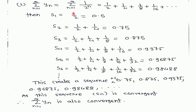For another example, if we have the series of 1/(2^n), we can generate the sequence of partial sums: s1 = 0.5, s2 = 0.75, s3 = 0.875, and so on, creating the sequence 0.5, 0.75, 0.875, 0.9375, 0.96875, 0.984375, ... As this sequence approaches 1, the limit equals 1, which implies the sequence sn is convergent, and therefore the series 1/(2^n) is also convergent.